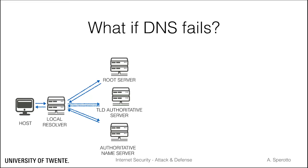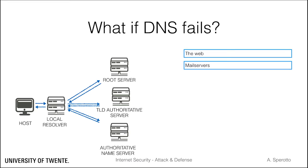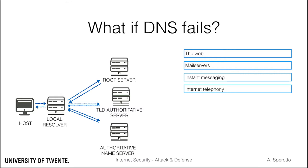To give some examples: the web, but also email, instant messaging and internet telephony. DNS has a certain built-in resistance to attacks. First of all, DNS is highly distributed and redundant. Second, caching can get you a long way before a failure propagates.